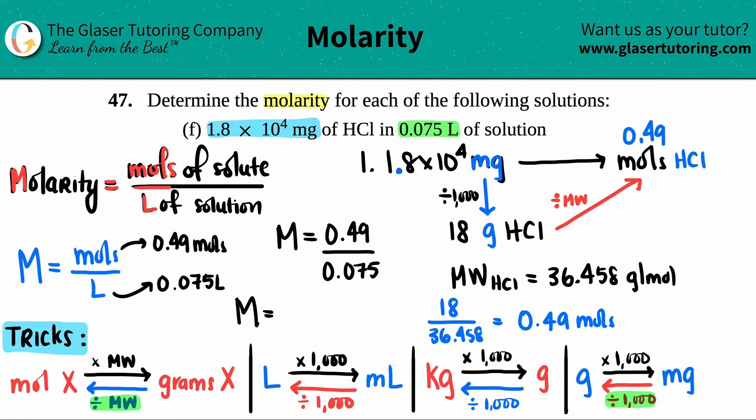0.49 divided by 0.075, I get 6.5. Units for molarity is either a capital M, so you could say 6.5 capital M, or you could just take the units of what you divided—mole per liter. They're equivalent, so it doesn't matter.